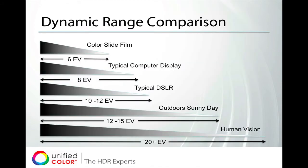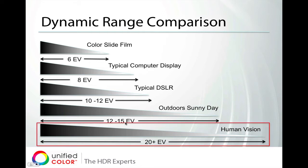Let's compare it to some of the different technologies out there. Color slide film had a dynamic range of about 6 EV, or 6 F-stops. A typical computer display will show you 8 EV. A high-end digital SLR will be anywhere between 10 and 12 EV typically. But you can have exposures on bright sunny days that are between 12 and 15 EV. And the human vision system can actually go 20 or more F-stops or EV.